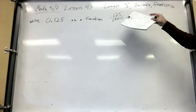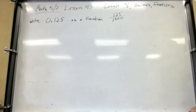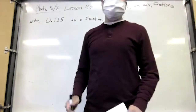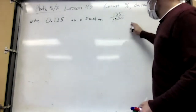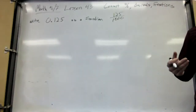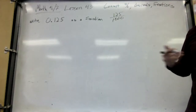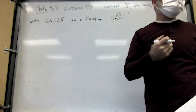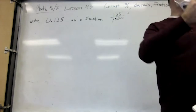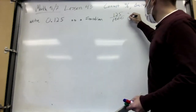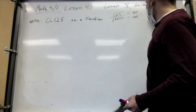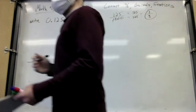This is technically the right answer, but whenever you can, you need to reduce. If you start dividing things by five, you might get there, but actually 125 goes into 1000 eight times. So if you divide everything by 125, you get 1 over 8. So this is one-eighth.